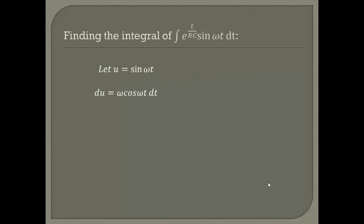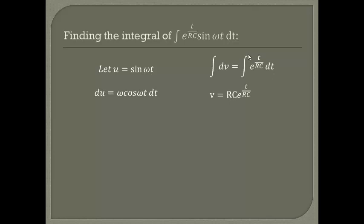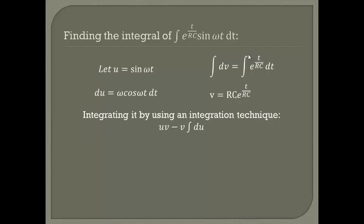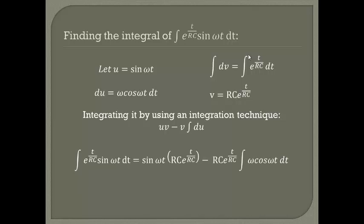Solving for the integral of e^(t/RC) sine(ωt) dt, we let u = sine(ωt) and dv = e^(t/RC) dt. We integrate by parts using the formula u·v minus ∫v du, giving us this equation.